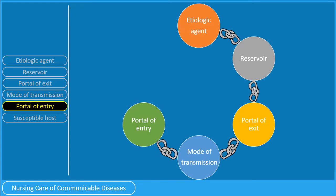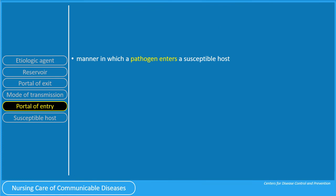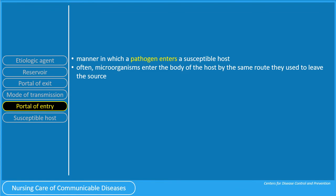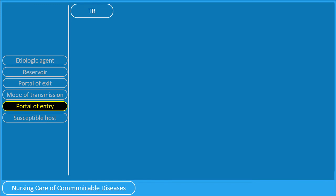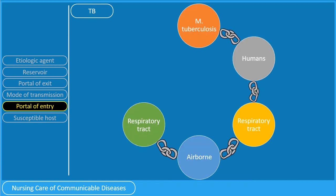Let us proceed with the portal of entry. The portal of entry is the manner in which a pathogen enters a susceptible host. Often, the microorganism enters the body of the host by the same route they use to leave the source. The portals of entry are the same as portals of exit, except the skin — because intact skin prevents infection. Any break in the skin, however, can readily serve as a portal of entry. For Mycobacterium tuberculosis, the portal of entry is also the respiratory route.